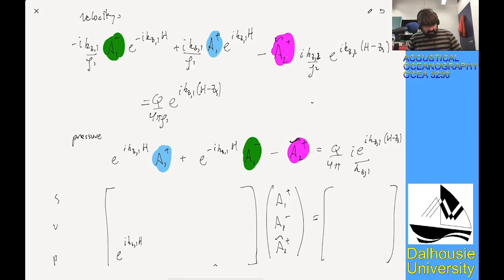So times A1 plus, we have E to the I KZ1H. Then we're going to have the E to the minus I KZ1H, and then we're going to have just a minus one here. The slightly messier velocity just means we're going to have a KZ1 E to the I KZ1H, and that's all over rho one. We're going to have a minus KZ1 E to the minus I KZ1H, and this is all over rho one. And then we're going to have a minus KZ2 over rho two for the A tilde plus. And then if you look back at our pressure, you know, that was the easiest one. The surface one, we just have one, one, zero.